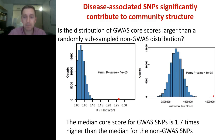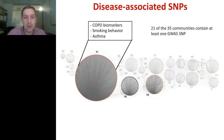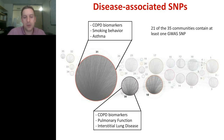We also looked at the communities of which these GWAS SNPs were a part. It turns out that 21 of the 35 communities in our network had at least one GWAS SNP. Looking at function: community 31 had GWAS SNPs for COPD biomarkers, smoking behavior, and asthma. Community 30 also had GWAS SNPs for COPD biomarkers, pulmonary function, and interstitial lung disease — also a sort of inflammatory lung disease — and recall community 30 had GO term enrichment for T-cell stimulation and inflammation. Community 18 had GWAS SNPs for psoriasis, Crohn's disease, and cytokine response.